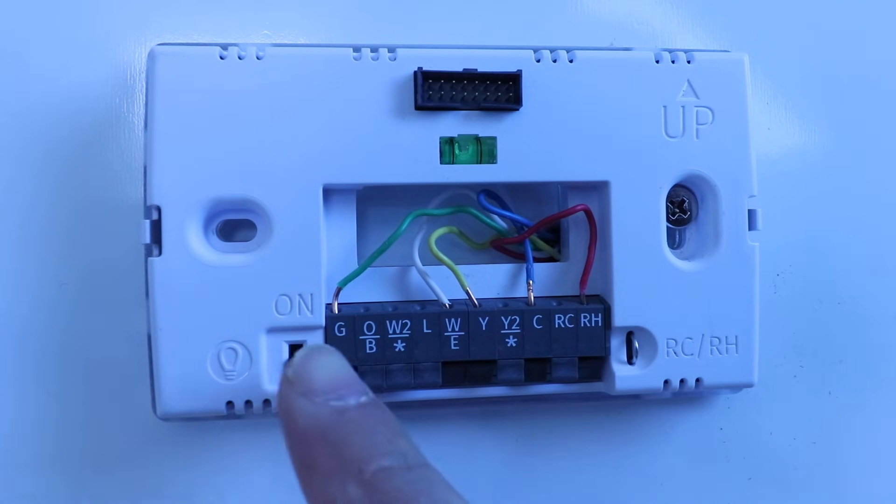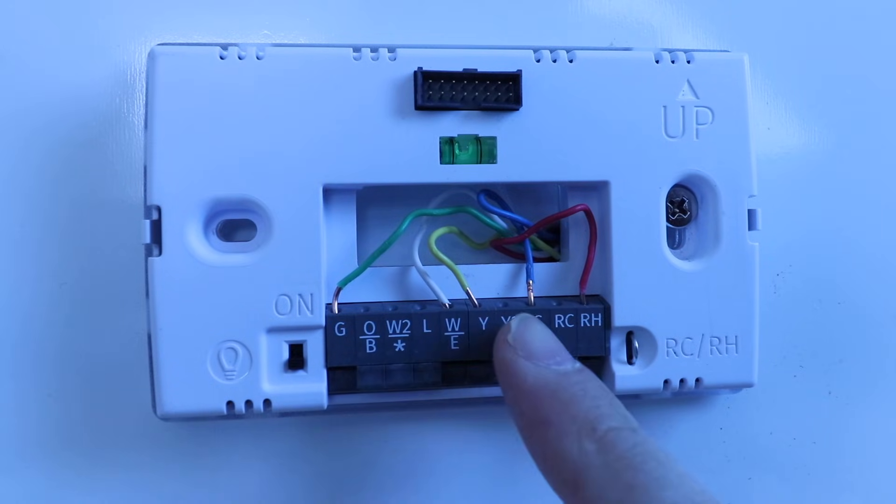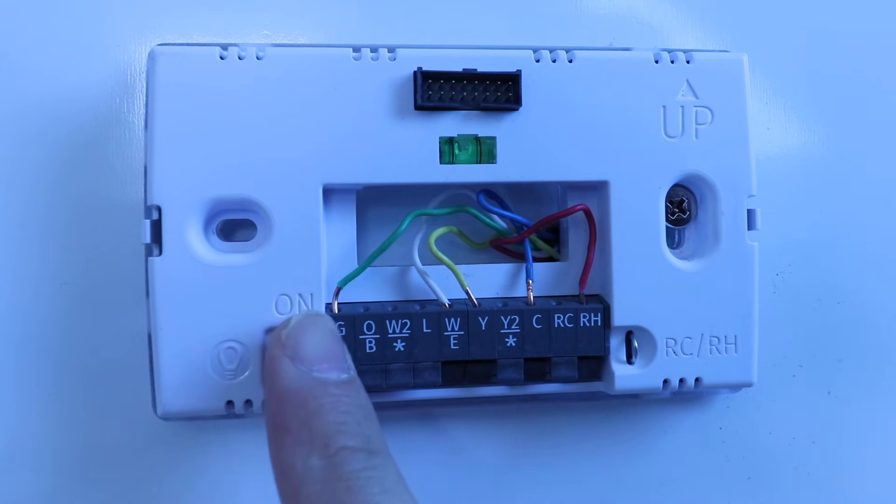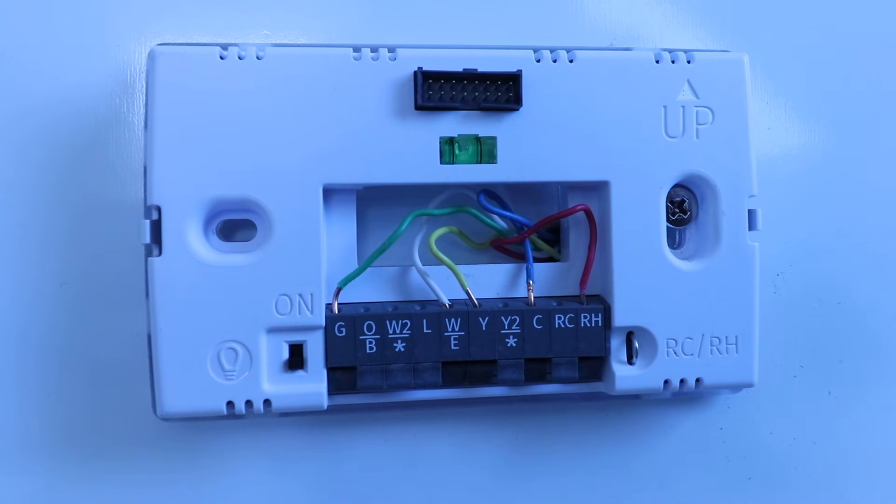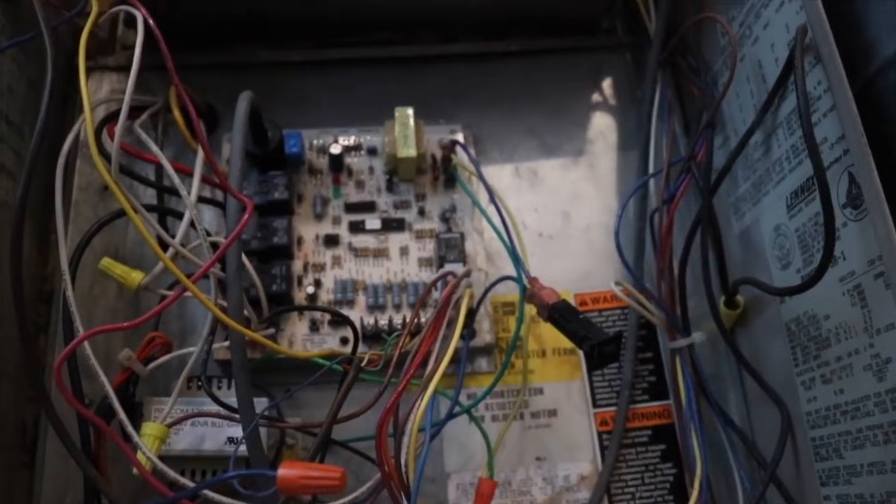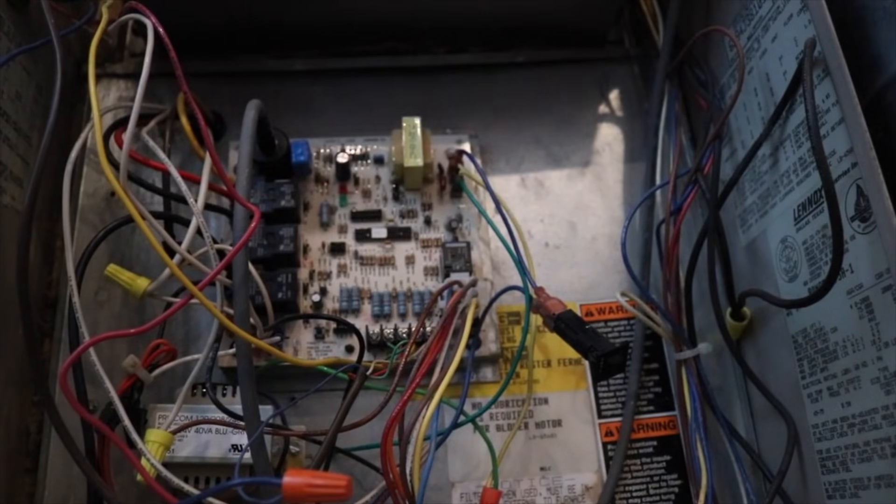One, you can take your G wire, which is your fan wire right here, and you can place it in the C wire in your smart thermostat. But then what you're going to need to do is take your G wire down in your existing HVAC system, where it's wired up from the thermostat to your HVAC system on the control board. And you're going to move your G wire over to the C terminal.